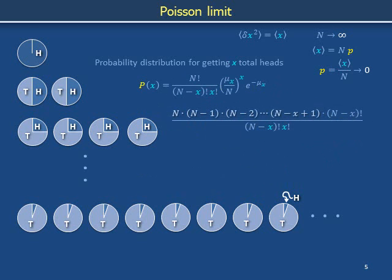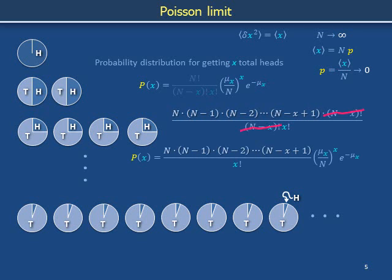We expand the factorial in the numerator by writing N factorial as N times N minus 1 times N minus 2, and so forth down to N minus x plus 1, times those subsequent factors collectively referred to as N minus x factorial. We then cancel factors of N minus x factorial in the numerator and denominator, and place the simplified combinatoric factor back into the main expression for the probability distribution.